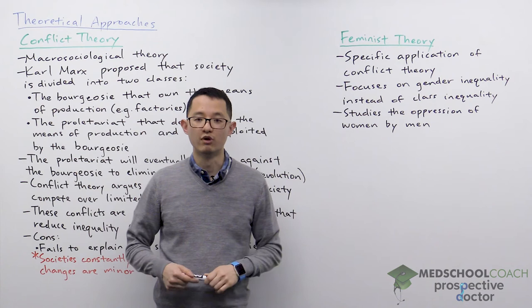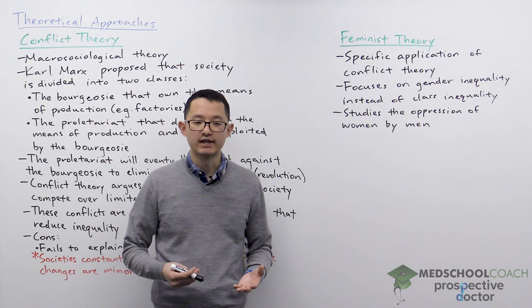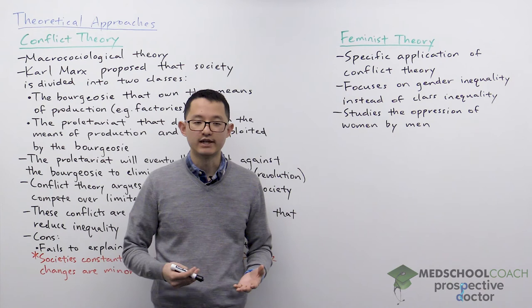There are a lot of studies in feminist theory looking at how men are oppressing women. A common example is income inequality — how men and women can be completing the same jobs, the same tasks, and be equally competent, but men are still paid more than women in many instances.